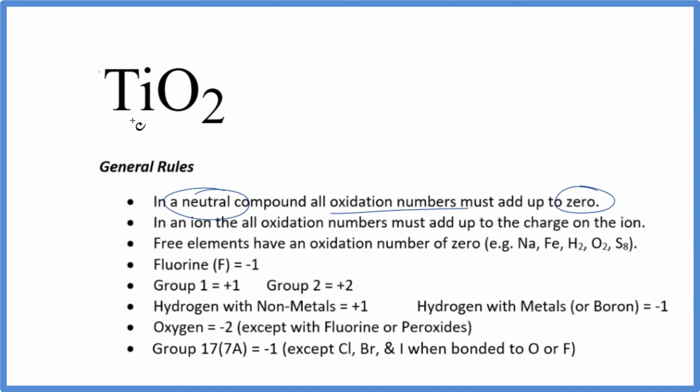The titanium is a transition metal. We don't know its oxidation state just looking at it. But oxygen is almost always minus 2, with a few exceptions. So each of these two oxygen atoms has a minus 2 oxidation number.